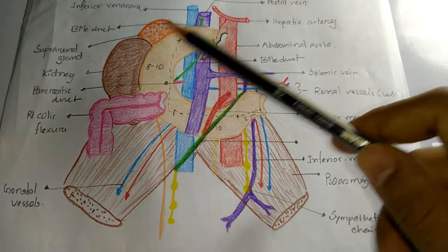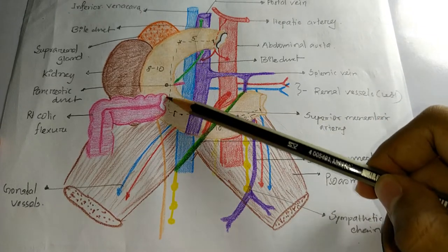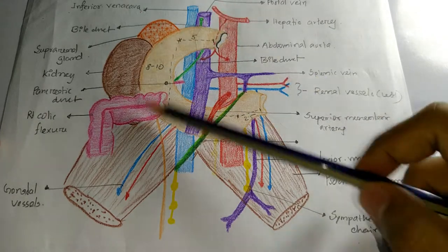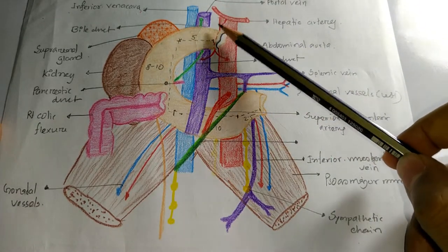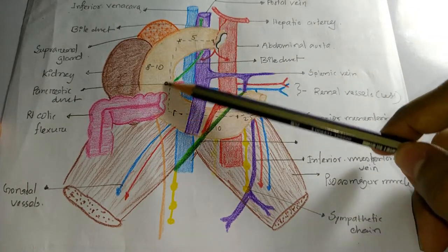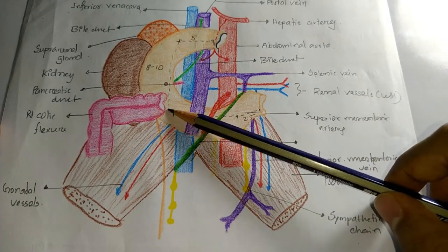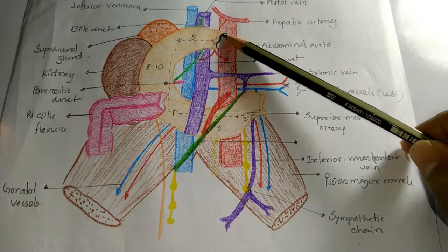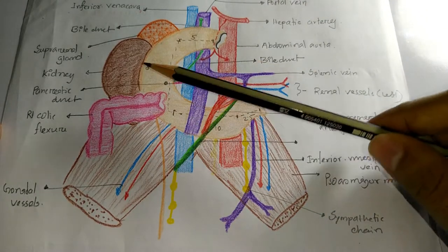The first part is partly peritoneal; the second part is retroperitoneal; the third part is also retroperitoneal; and the fourth part is also retroperitoneal. So most of the duodenum is retroperitoneal.